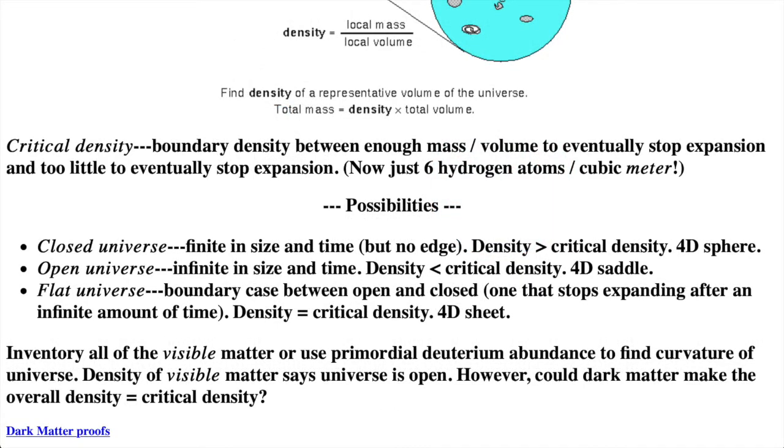Here are the three possibilities again. A closed universe has positive curvature and is finite in size and time but has no edge. Its density is greater than the critical density and it's like a four-dimensional sphere. An open universe has negative curvature and is infinite in size and time. Its density is less than the critical density and is like a four-dimensional saddle.